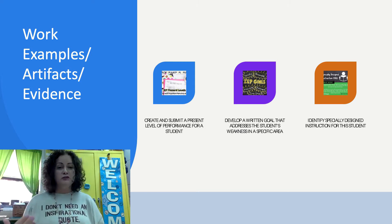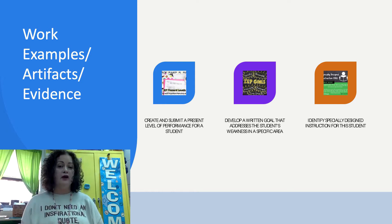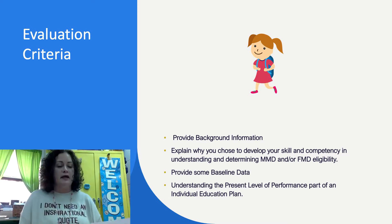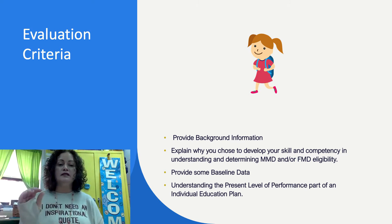The first part of an IEP is the present levels of performance, and that's where you summarize the individual's current performance, incorporate information from a variety of sources — most importantly the evaluation. You have to be able to analyze the evaluation and put it in the present levels of performance in a cohesive manner that makes sense, bridging those evaluation results into a plan using the student's strengths and weaknesses.